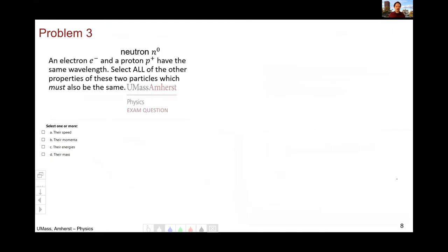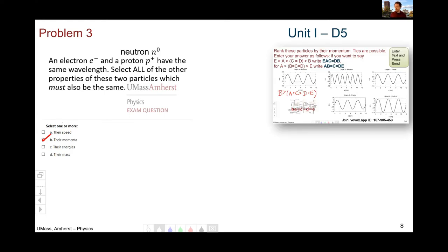Problem three, you had either an electron and a proton or neutron with the same wavelength. It didn't actually matter which version you had. Which other properties must be the same? Well, if the wavelengths are the same, their momenta must also be the same. Nothing else. The mass is wildly different between electrons and protons. You can see that on your equation sheet. It's a factor of about 2,000 times. And because of those mass differences, their speeds will be different if their momenta are the same, and their energies will also be different.